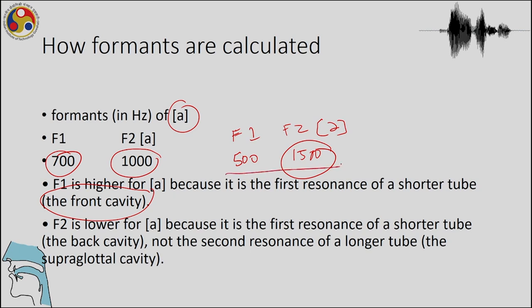For the schwa, F1 at 500 Hz and F2 at 1500 Hz are the first and second resonances of the same long tube. For a vowel like R, the formant frequencies are different because two separate cavities — the front cavity and the back cavity — are involved in production, unlike the schwa. This is how a tube model predicts formant frequencies based on the different tubes and their resonant frequencies.